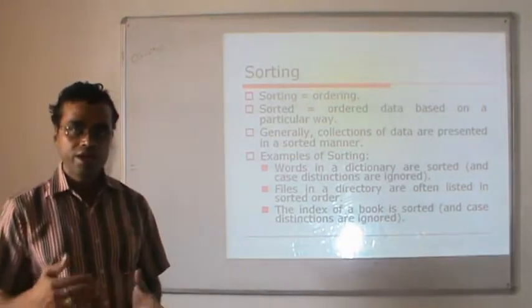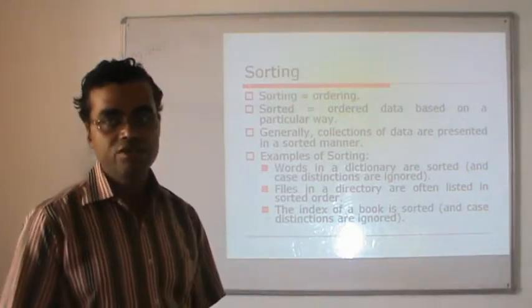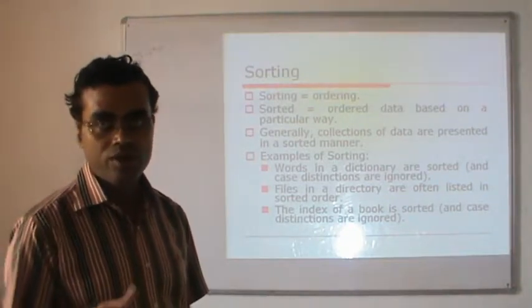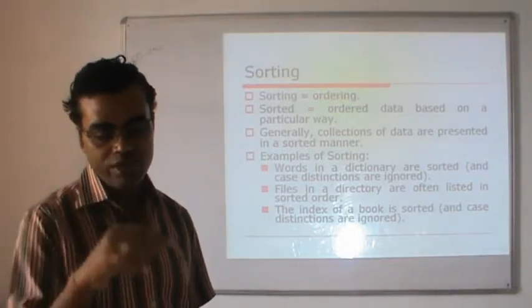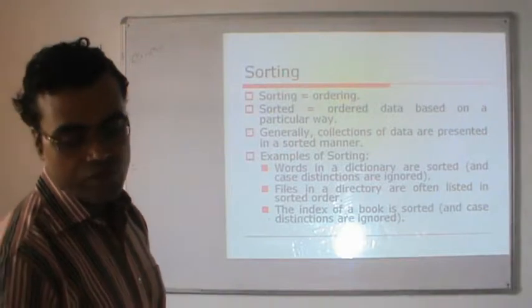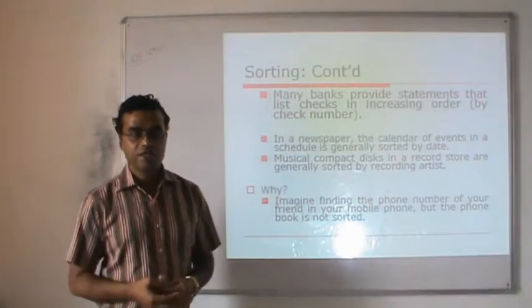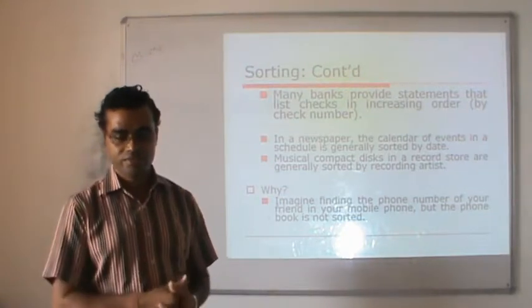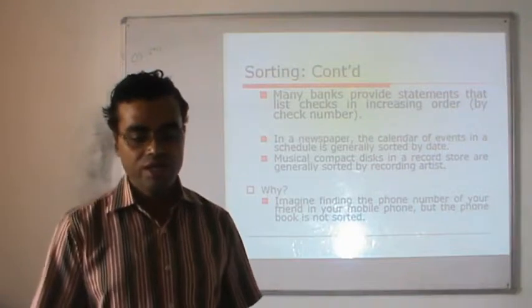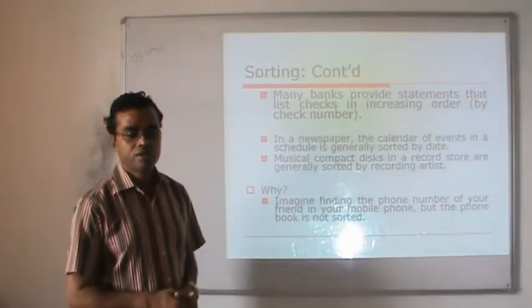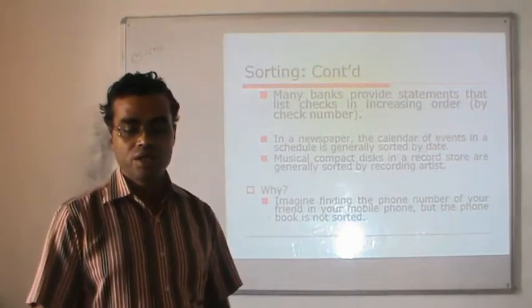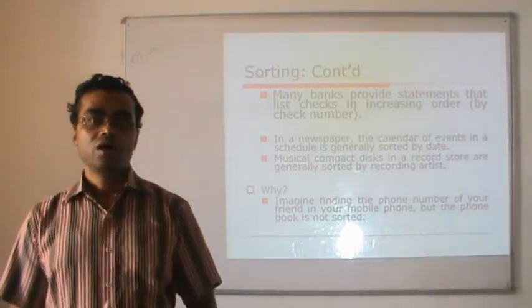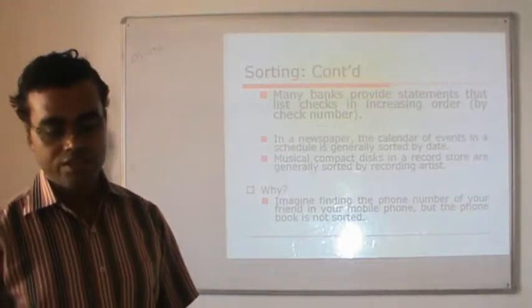The index of a book is in sorted order, so we can retrieve a particular topic by going to the index and jumping directly to the page. Other examples include bank statements sorted by check number, a calendar of events sorted by date, and audio CDs in a recording store arranged in order of the recording artist.